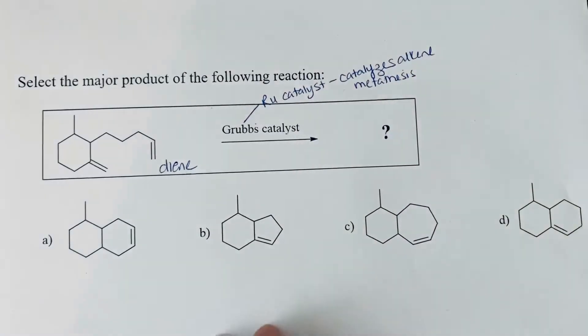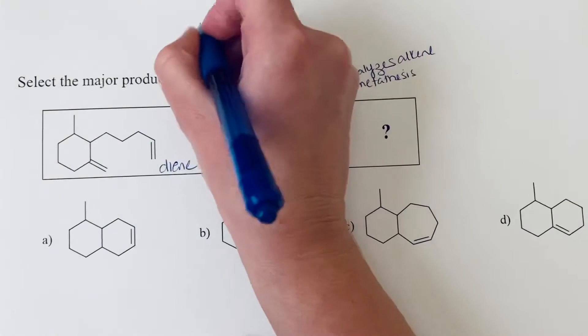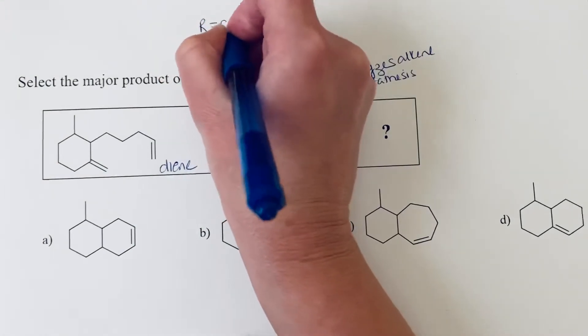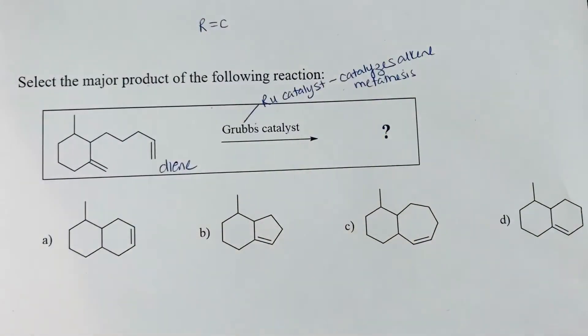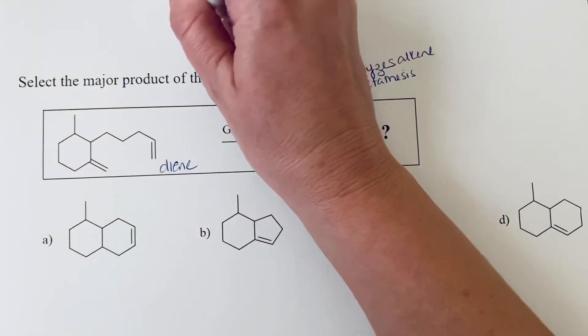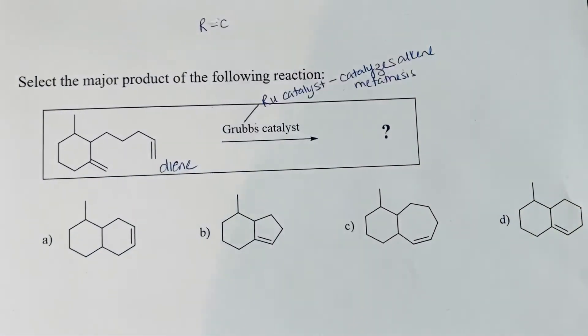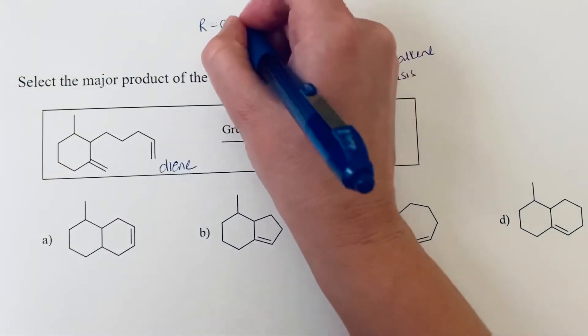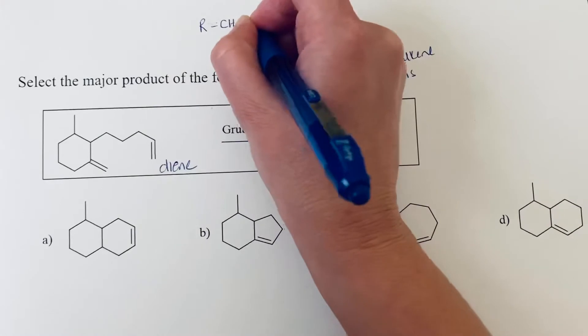So what takes place in an alkene metathesis reaction is essentially you have two alkenes. I want that to be a single bond to the R group, not a double bond. Okay, so a single bond. And so this carbon here is going to be our alkene. So we have an alkene.